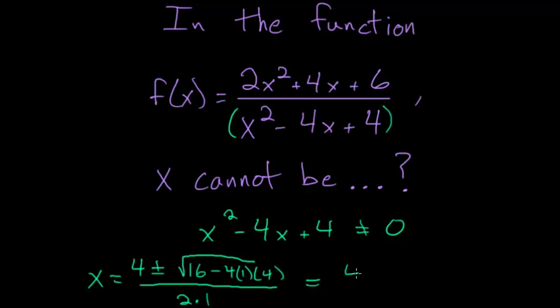So what we're left with is just 4 divided by 2, which simplifies to just 2. So x cannot be this number 2.